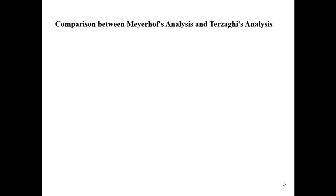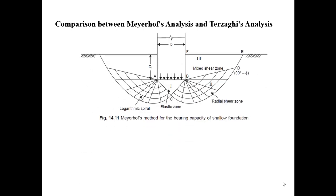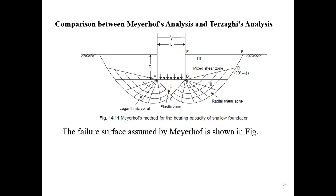Now we can compare Meyerhoff's equation and Terzaghi analysis — what is the basic difference? Based on the diagram, you can see three zones: zone 1, zone 2, and zone 3. In Terzaghi's equation, zone 1 is the elastic zone, zone 2 is the radial shear zone, and zone 3 was the Rankine passive zone. But in Meyerhoff's analysis, zone 3 changes to a mixed shear zone.